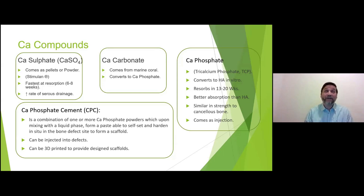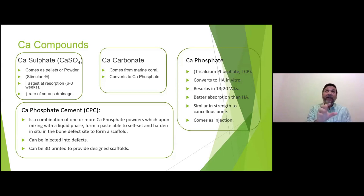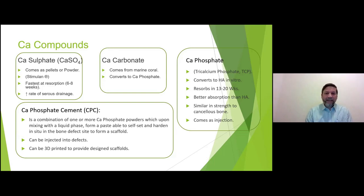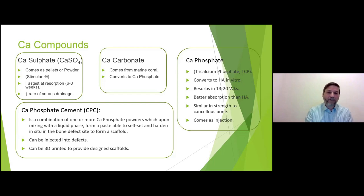The ideal substitute should absorb as the bone is growing, so there's no period of void. The problem with the earlier individual products is they tend to get absorbed before the bone has fully integrated and filled the gap. The cement design solves this: some of it absorbs leaving a space for bone to grow while the rest is still there holding the gap, filling it, and preventing structural weakness.